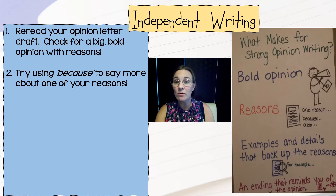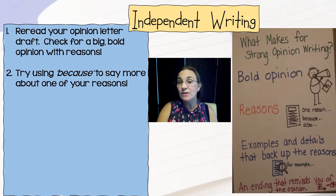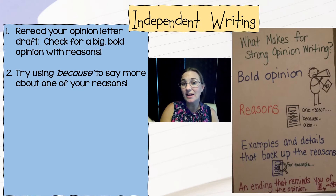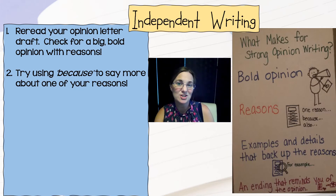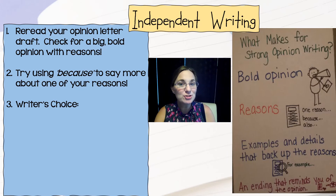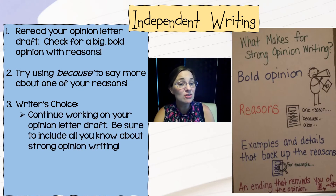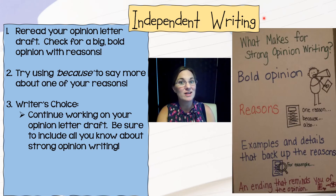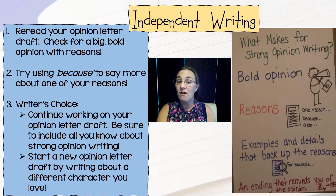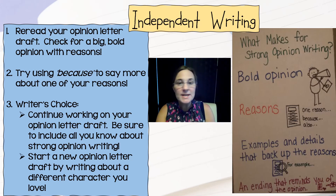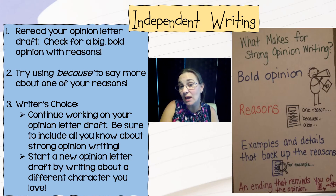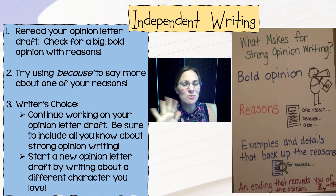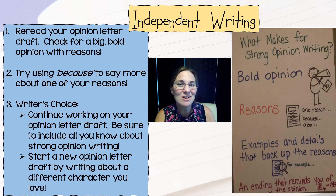Try using "because" to say more about one of your reasons. If you've already finished the letter, you can always add it to the side and then just draw a little arrow to go where you want it to go. After you try that, I want you to make a writer's choice. You can either continue to work on your opinion letter draft — be sure to include all that you know about writing a strong opinion — or you can start a new opinion letter draft by writing about a different character you love. Remember, it doesn't have to be a character that we read about in class; it could be someone from your own independent reading. All right, writers, head off and try to support your reasons with the word "because," and then keep sharing your opinion.